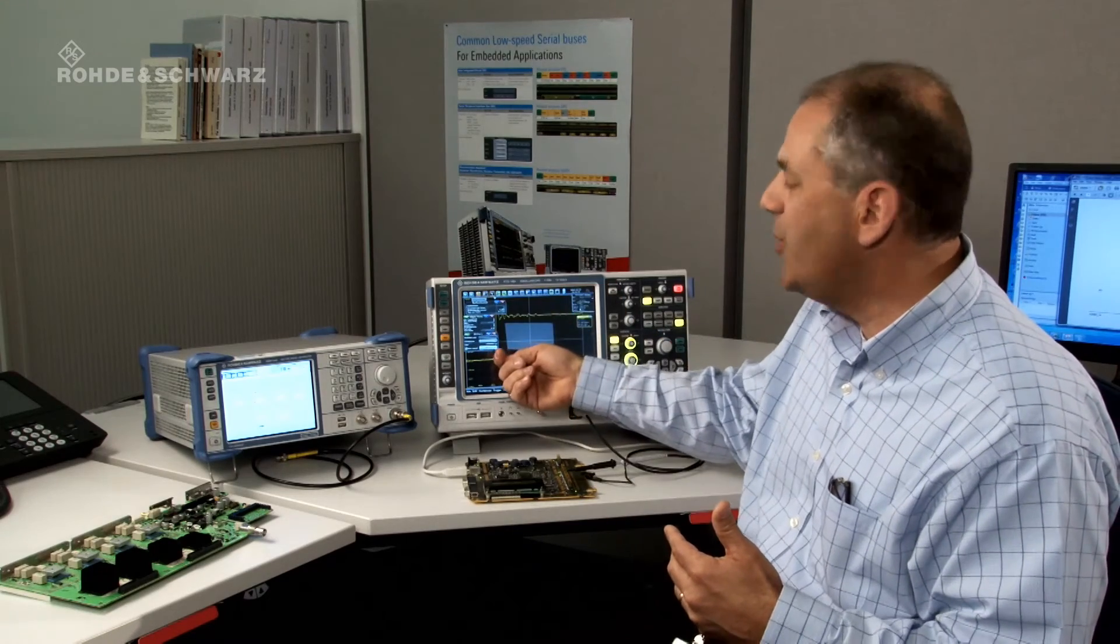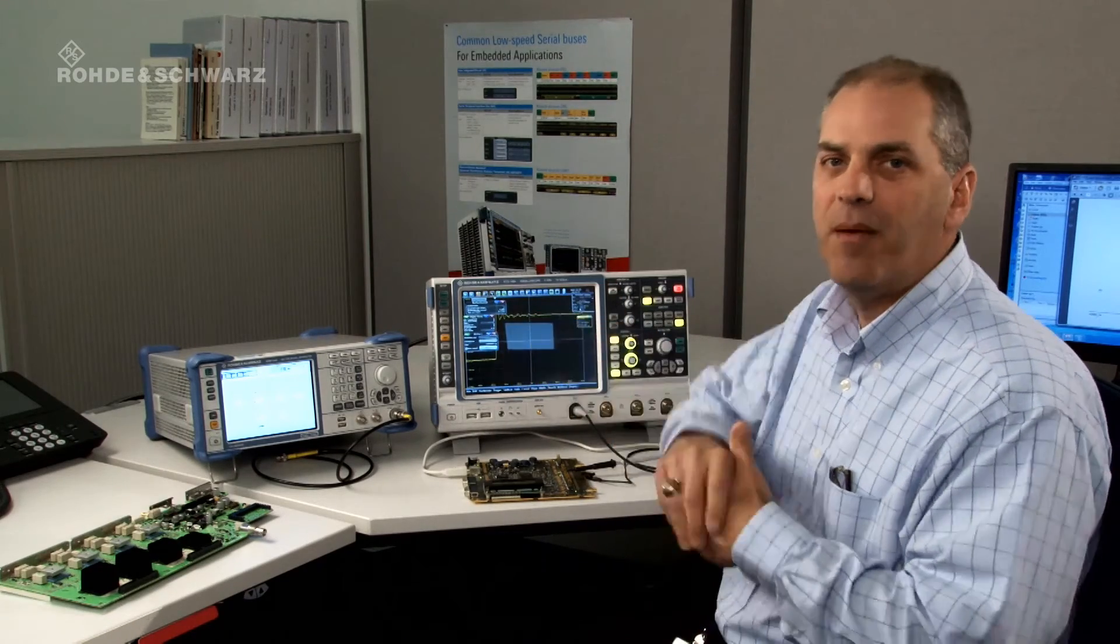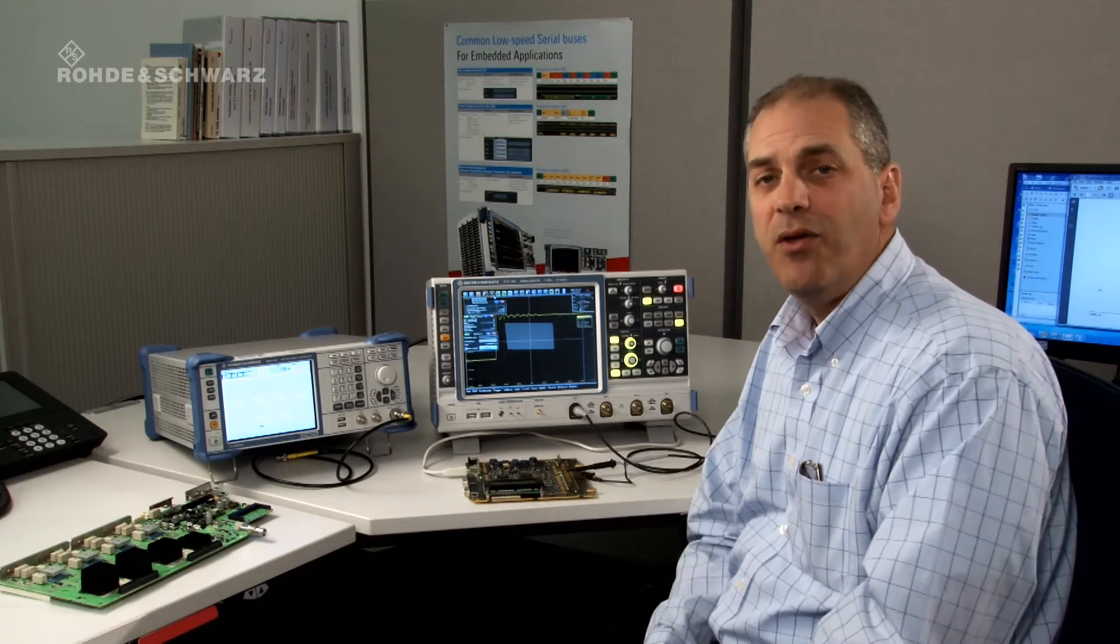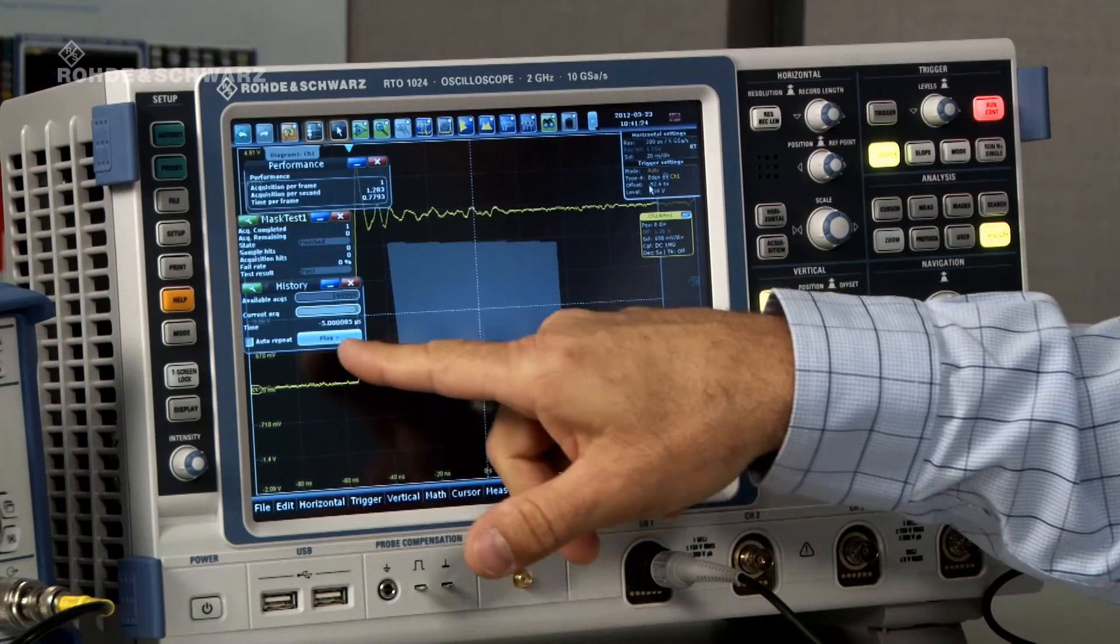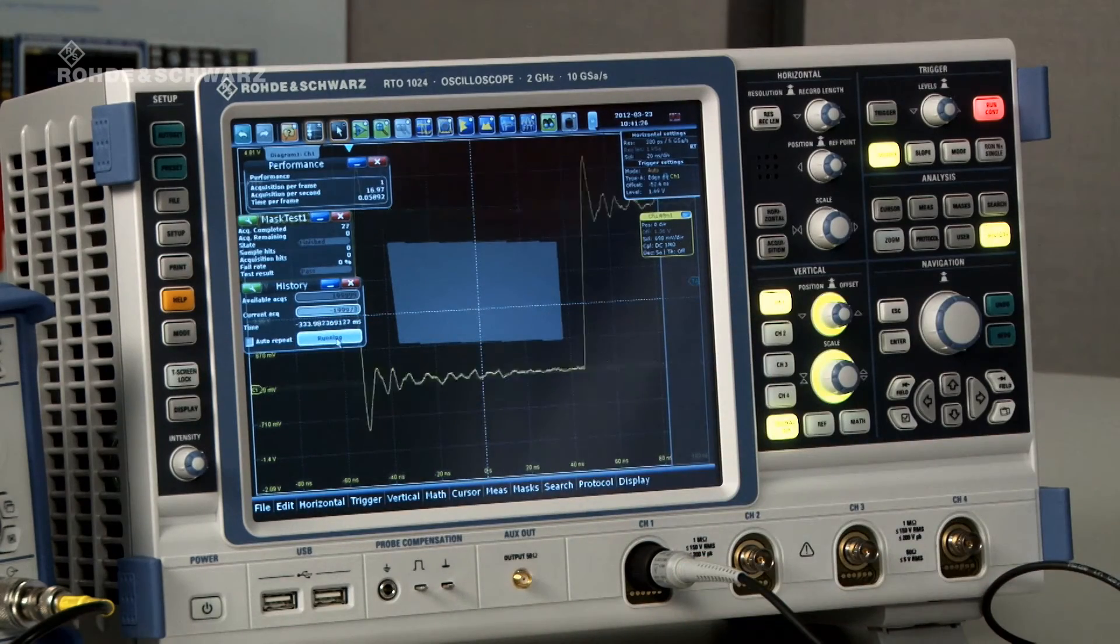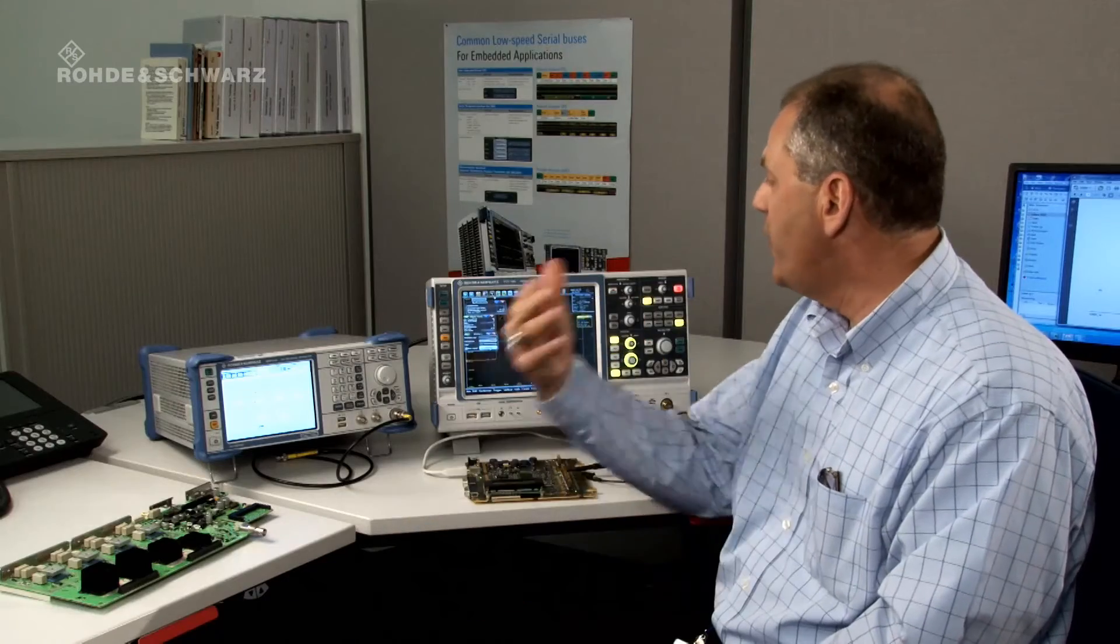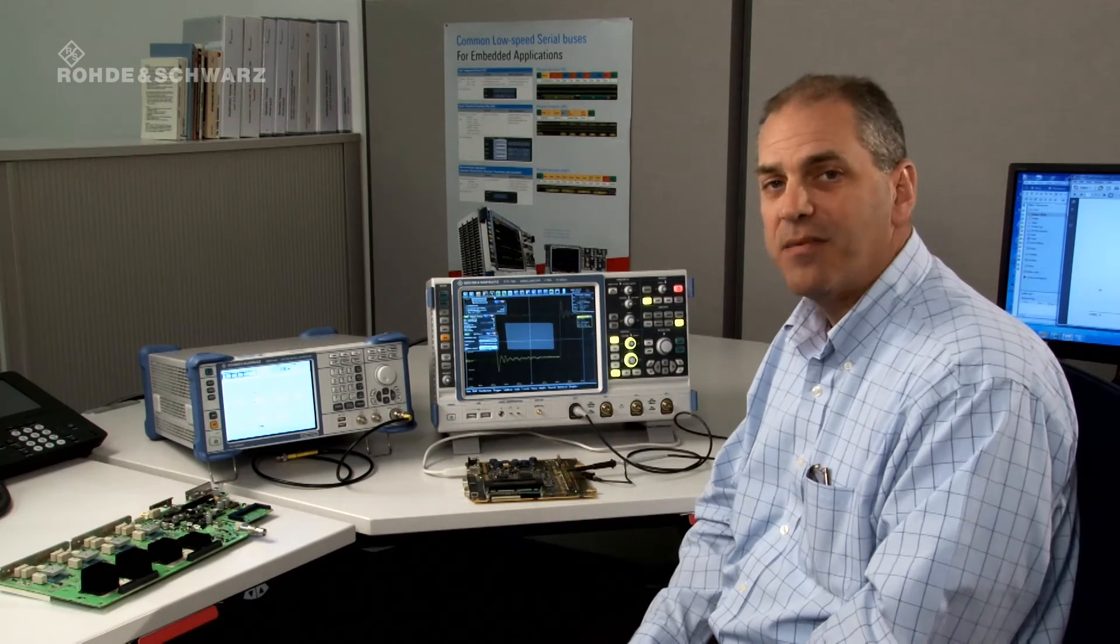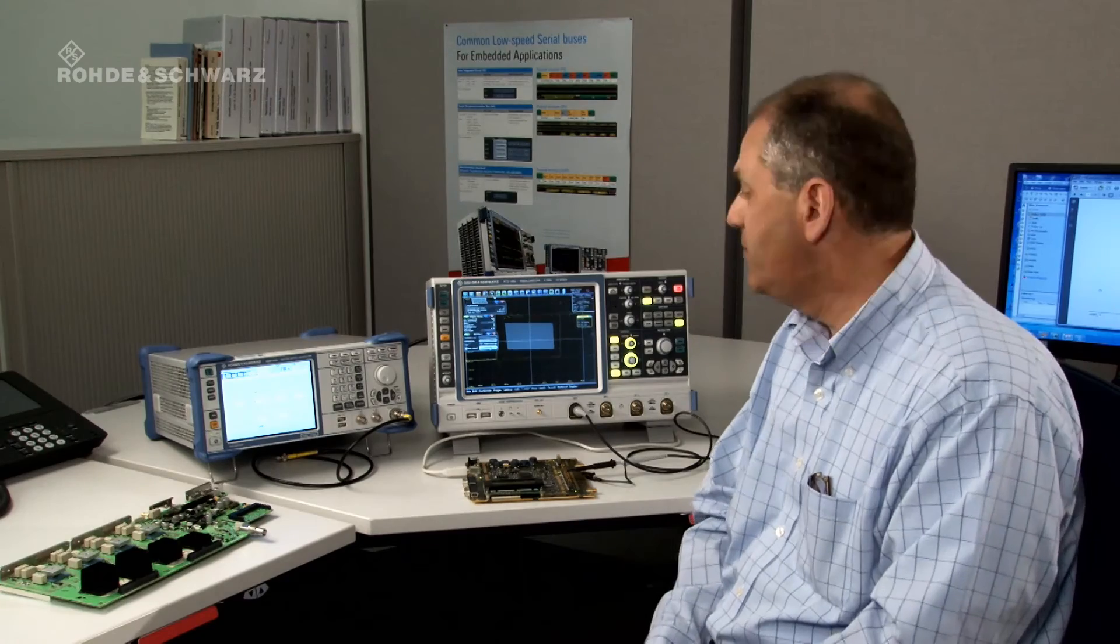You can also play the data back kind of like a tape recorder and just watch the recorded waveforms as they go past the mask. And the speed of this recording can be varied from second per update to milliseconds per update. So you can actually page through the data very, very slowly.